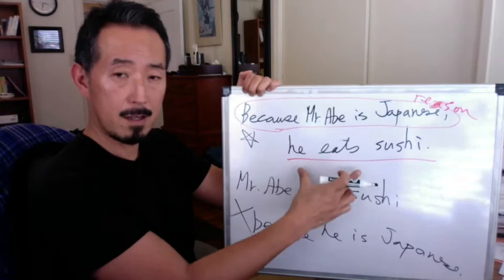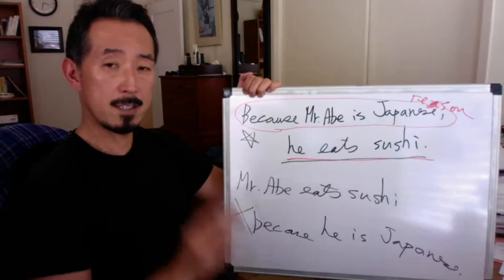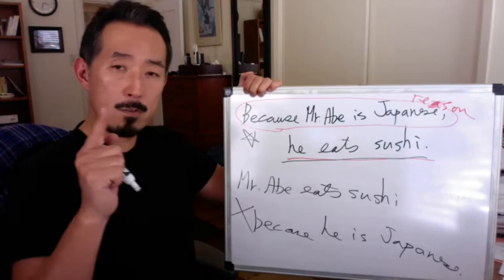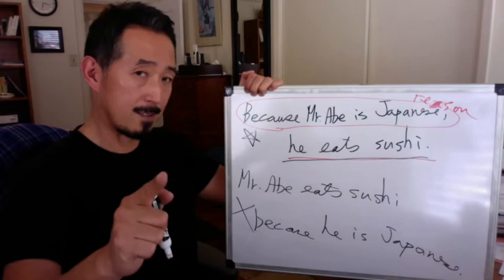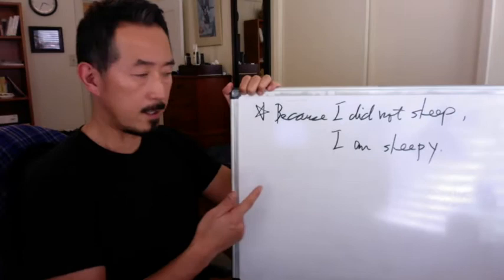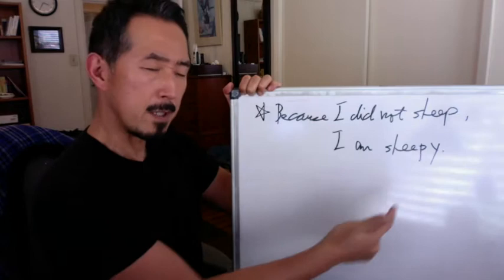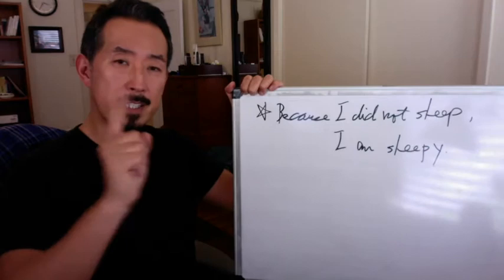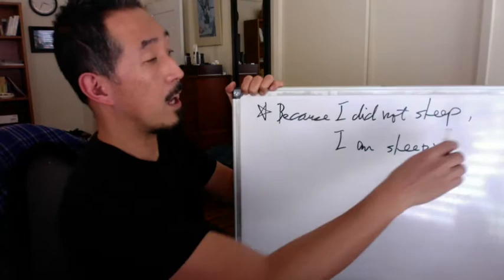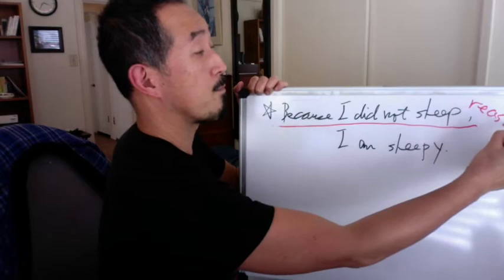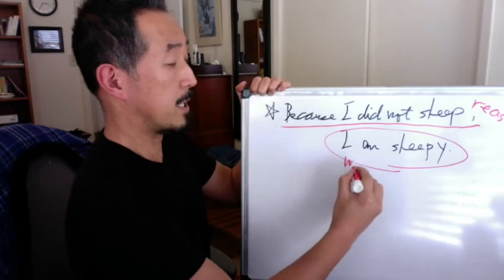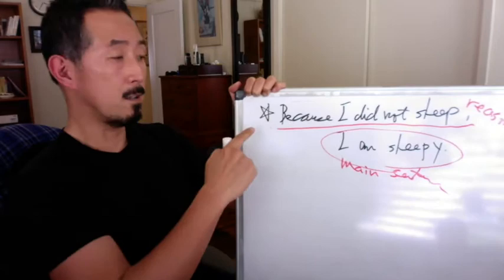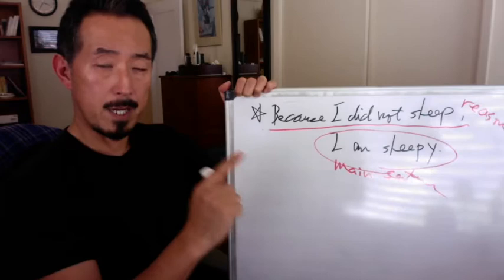Always, reason comes first before the main sentence. The main sentence is 'he eats sushi' — that's what you want to say. This is the reason for the main sentence — always put the reason first. In Japanese you cannot put the reason after the main sentence. Reason comes first.